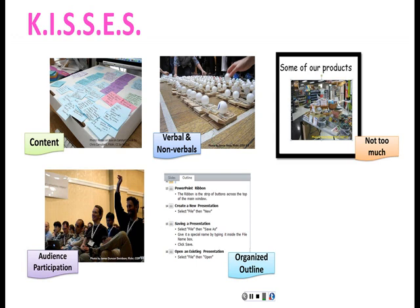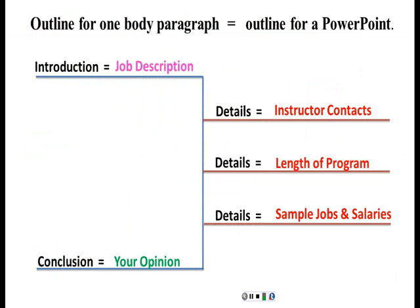How many words on this screen? Now you have 10, so we're getting better. The outline for a one-body paragraph is the same outline for a PowerPoint — just a few different words. In the introduction, this is going to be for your project: you're going to be talking about a job description of one of the IBEST jobs. Your details are listed here: instructor content, contacts, length of program, sample jobs and salaries. And then your conclusion can be your opinion or a brief summary.